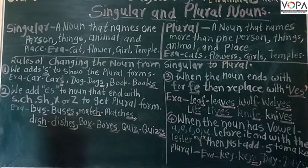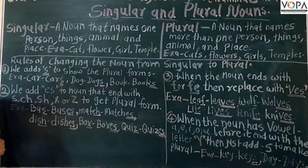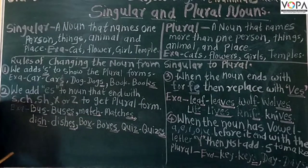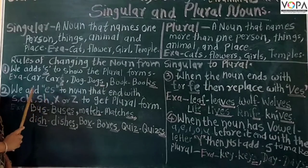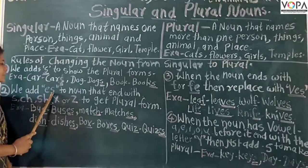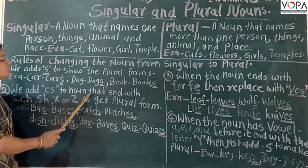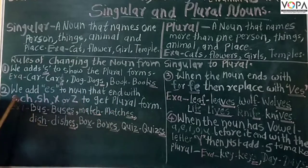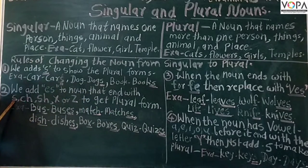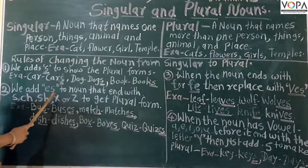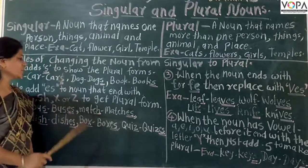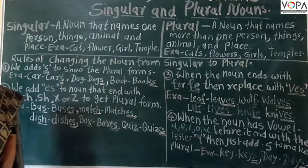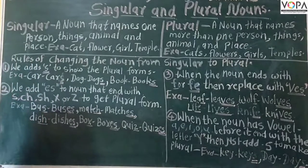Now let's see rule number 2. We add E-S to nouns that end with S, C-H, S-H, X, and Z to get the plural form.